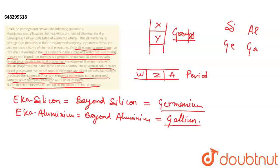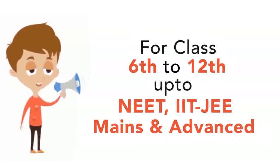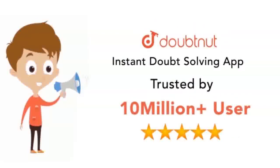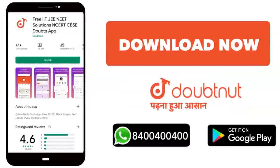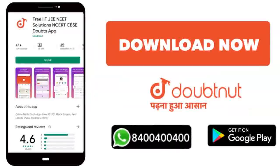तो हमसे पूछा गया था कि Eka Silicon और Eka Aluminium क्या है, तो हमने बता दिया Germanium और Gallium है. Thank you. Class 10 से लेके NEET, IIT JEE Mains और Advance के level तक 10 million से ज्यादा students का भरोसा. आज ही download करें Doubtnut app या WhatsApp कीजिए अपने doubts 400 400 400 पर.